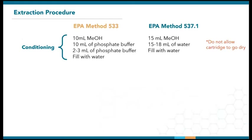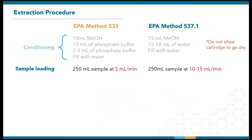The cartridge conditioning stage involves activating the sorbent with methanol followed by other reagents. According to the methods, care must be taken to ensure that the sorbent does not go dry. As a result, each cartridge usually has to be conditioned individually if done by hand. Once the cartridge is conditioned, 250 ml of samples are then loaded at 5 ml per minute for Method 533 and 10 to 50 ml per minute following Method 537.1. Flow control is especially important for weak anion exchange, and we have seen improvements in fluorotelomer and long-chain recoveries at reduced flow rates.